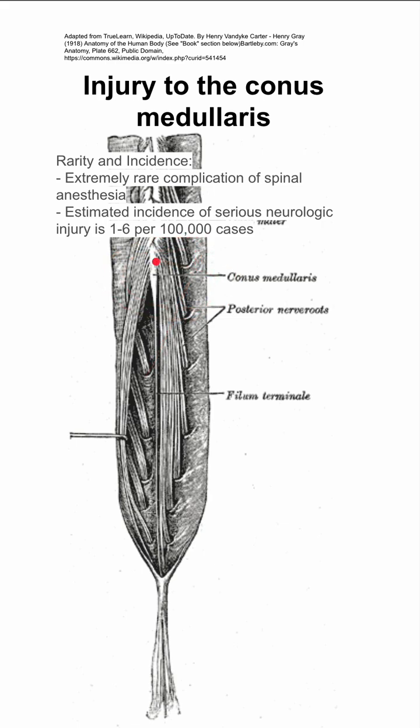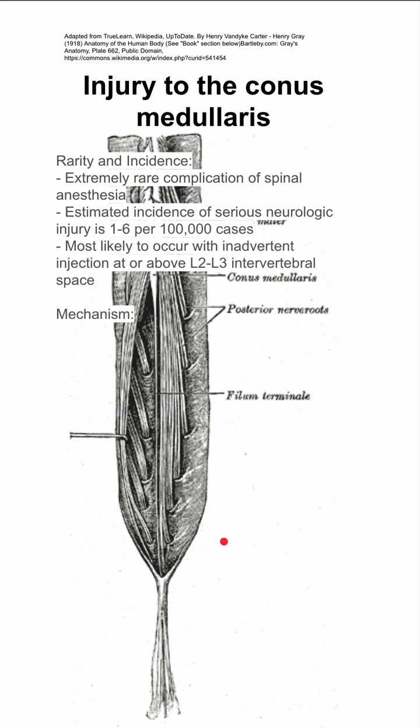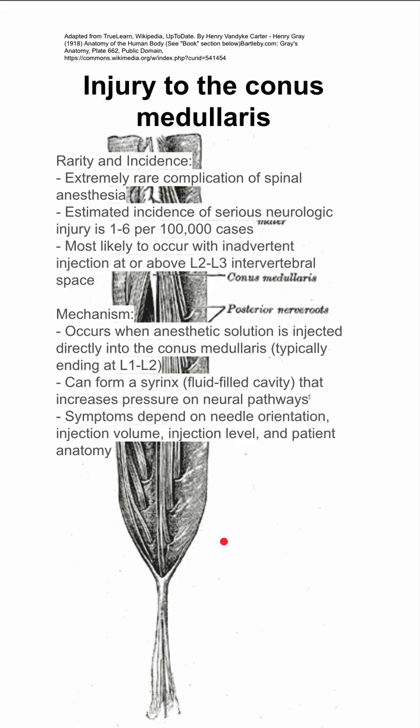Typically when we do a spinal, we usually aim for the L5 to S1 level, so much lower than where the conus medullaris should be.